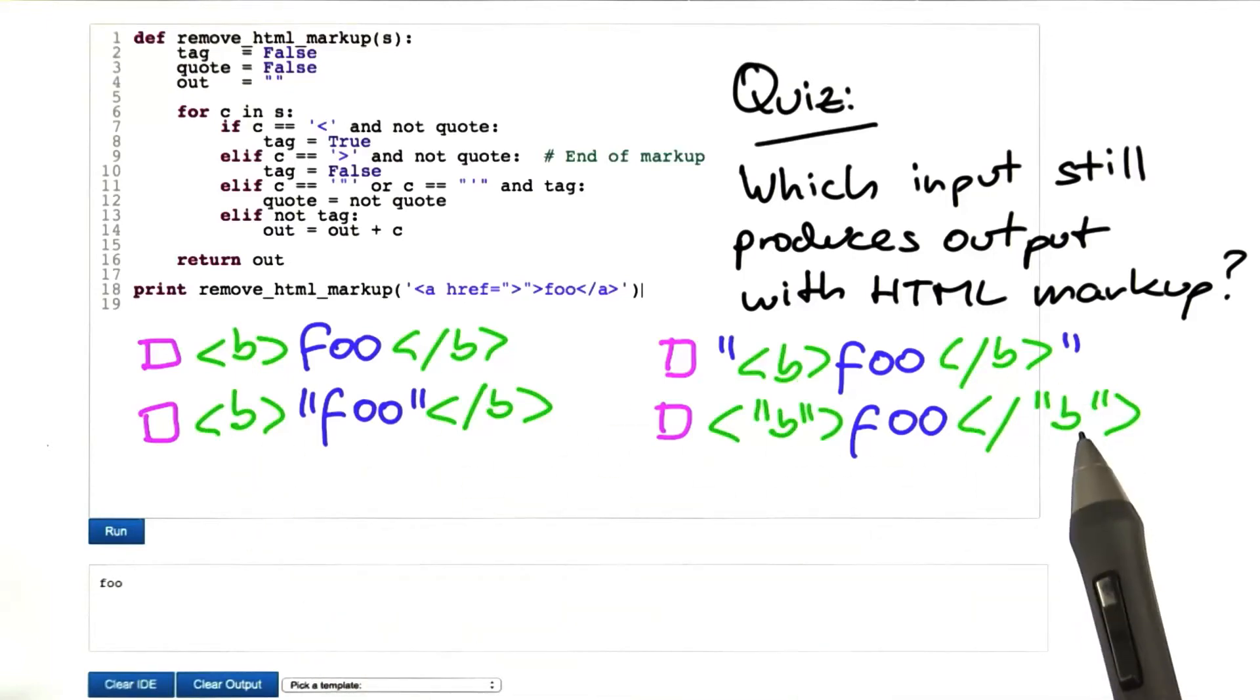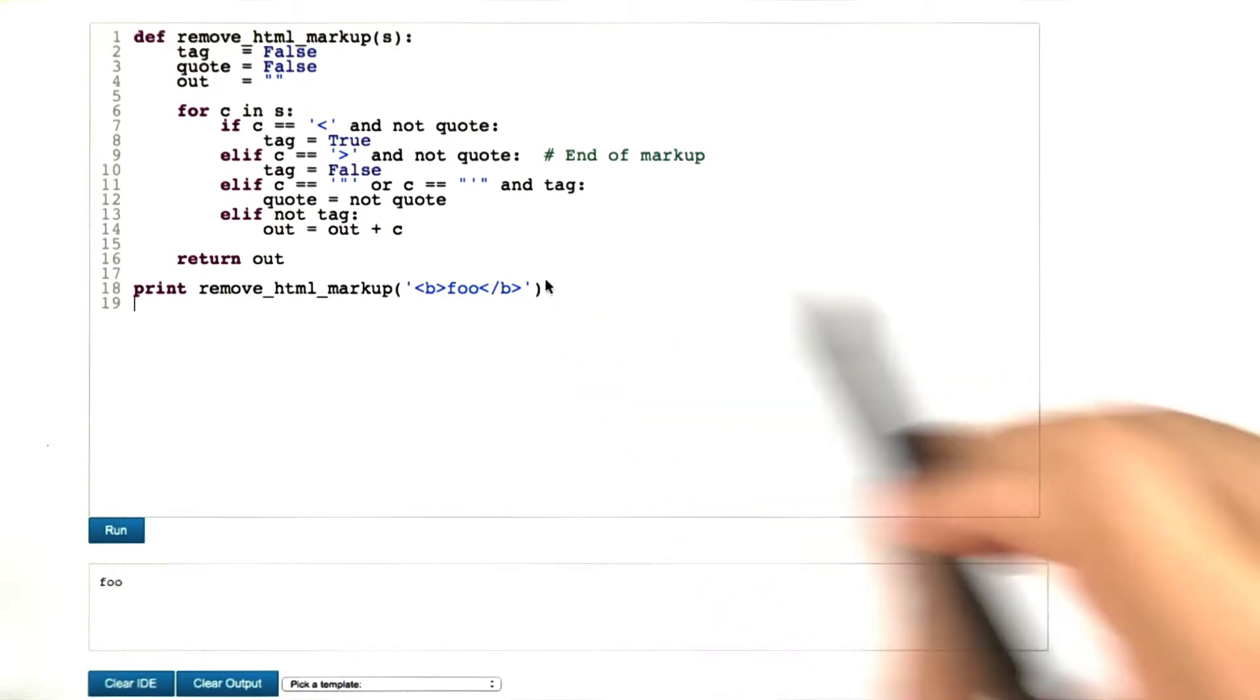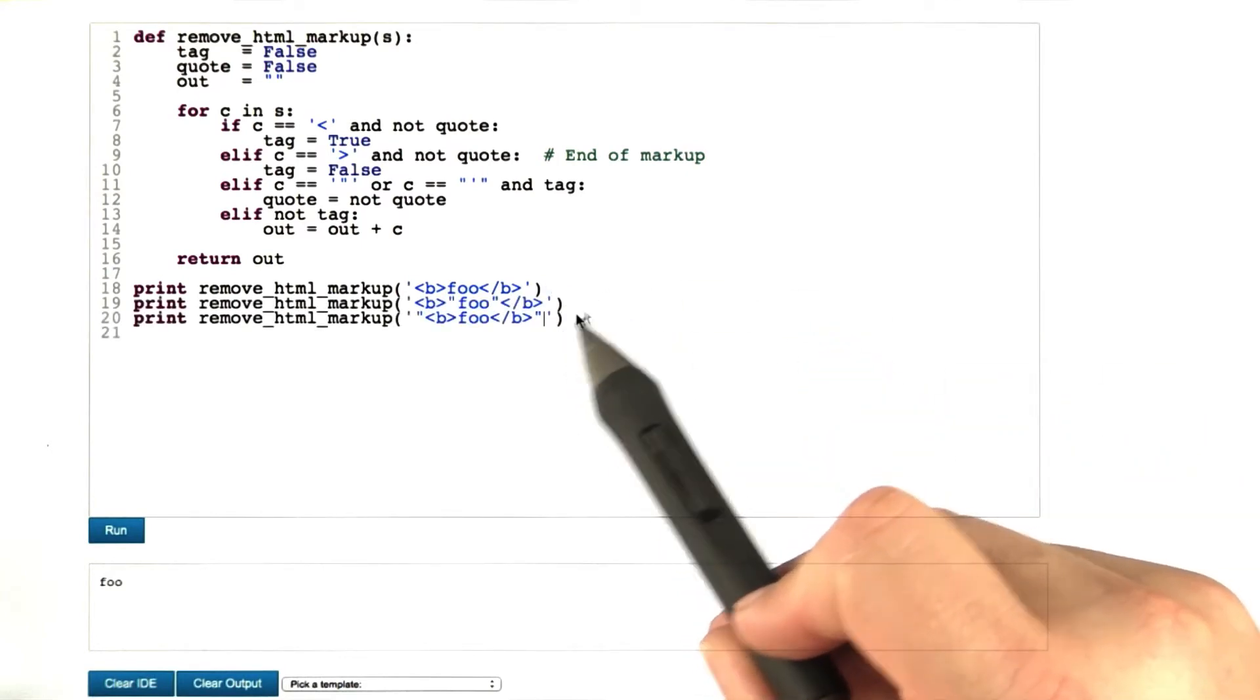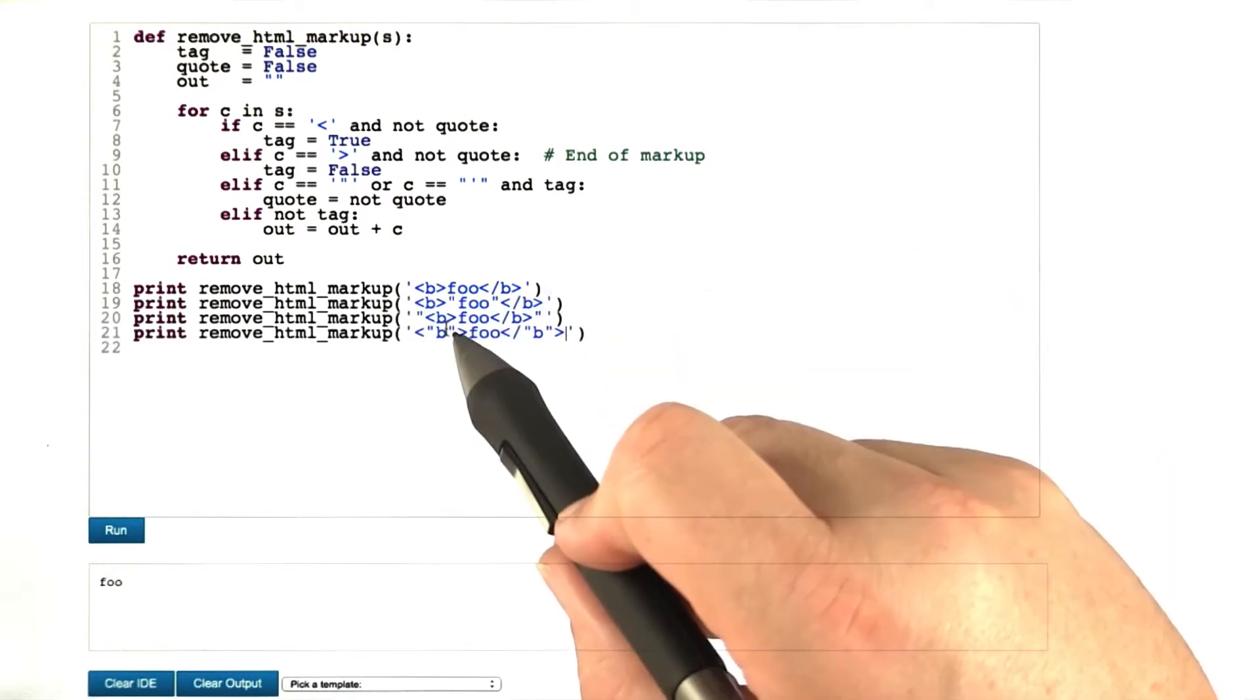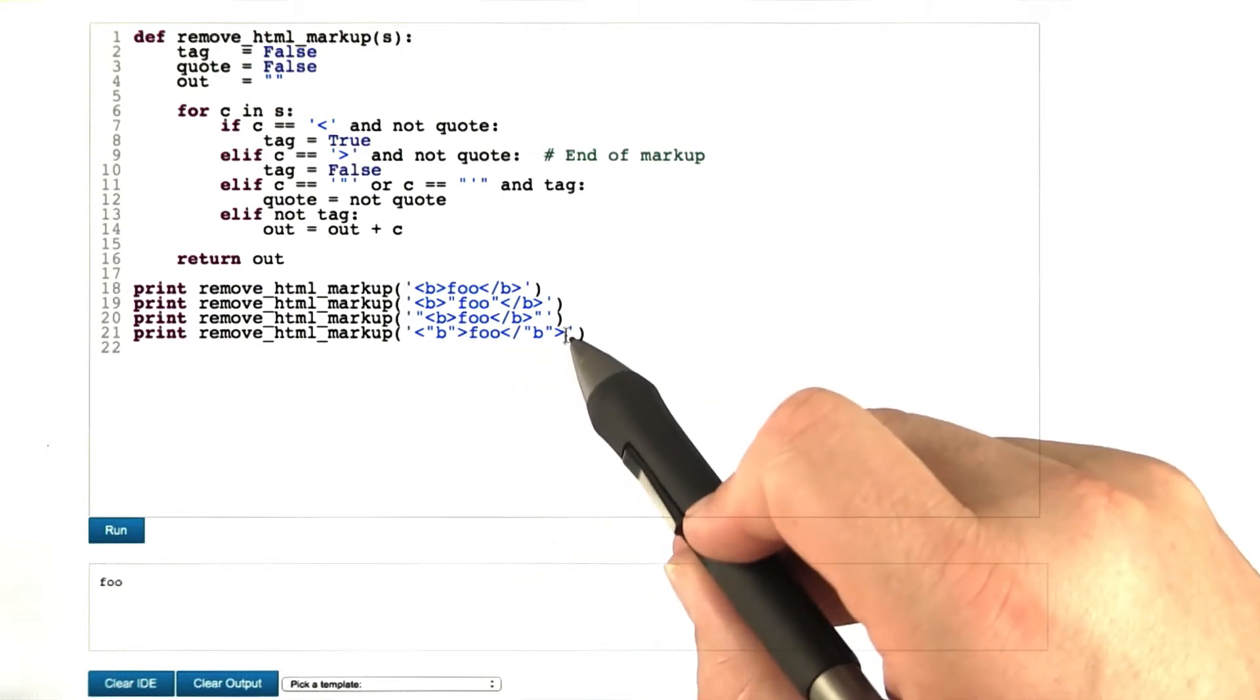And now for the answer. That's something that we can best find out by testing. Here's our first input. Here comes the second. Number three with the quotes outside, and number four with the quotes inside of the text.